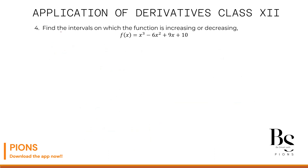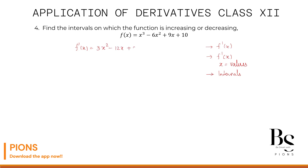Question 4: find the intervals on which the function is increasing or decreasing. The steps are: find f'(x), put f'(x) = 0 and find x values, then find the intervals and check each one. Differentiating, f'(x) = 3x² - 12x + 9.